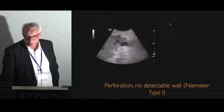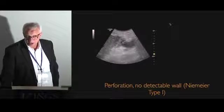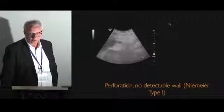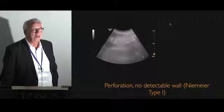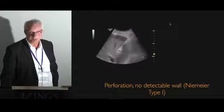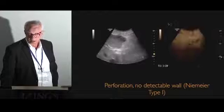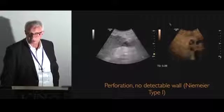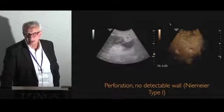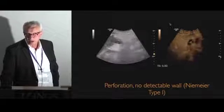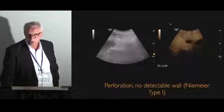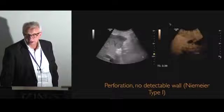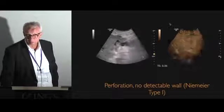This is a Niemeyer type 1 perforation — you don't see any gallbladder anymore. With contrast you can see a little bit better the free fluid, which is bile in the free abdomen.